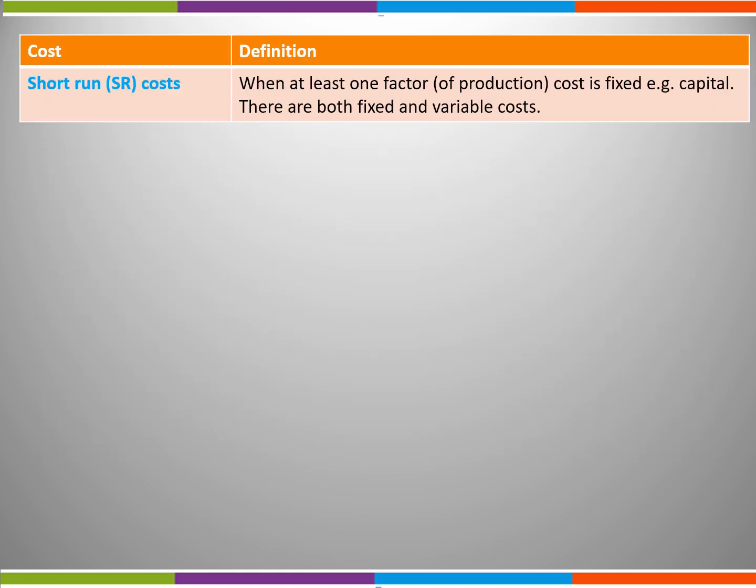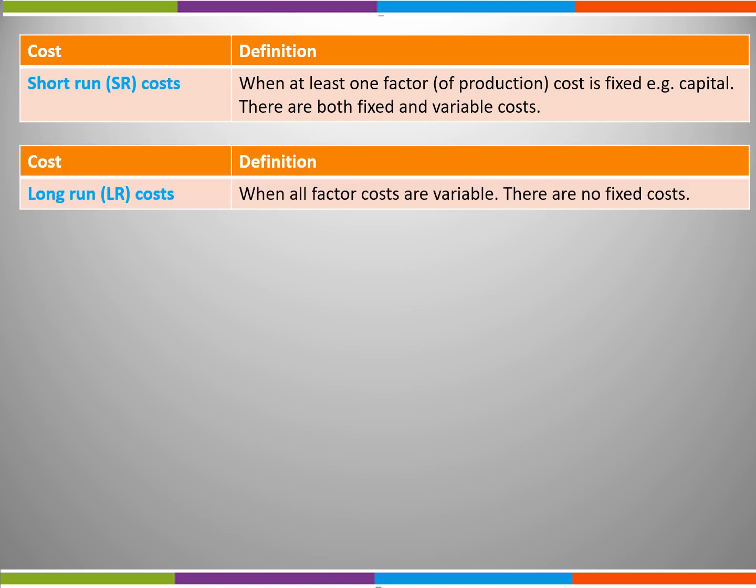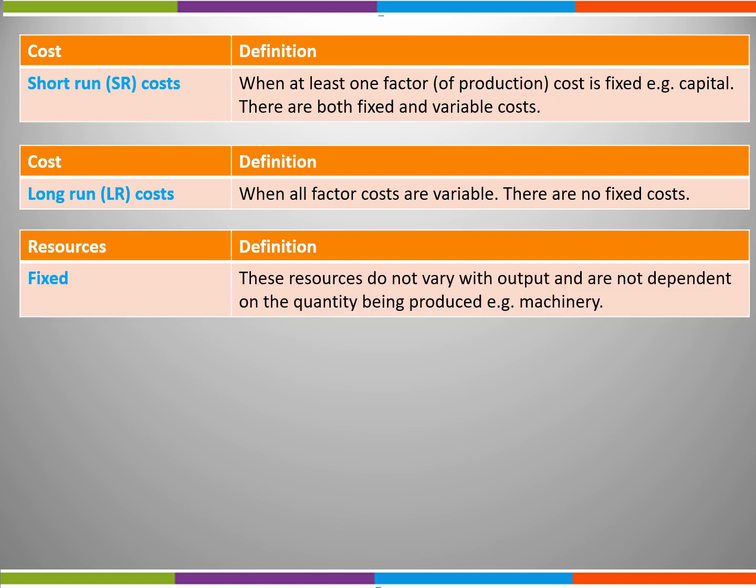Before we look at short run production costs we're going to look at some important concepts. Short run costs are when at least one factor cost is fixed, for example capital. There are both fixed and variable costs. Long run costs are when all factor costs are variable. There are no fixed costs.